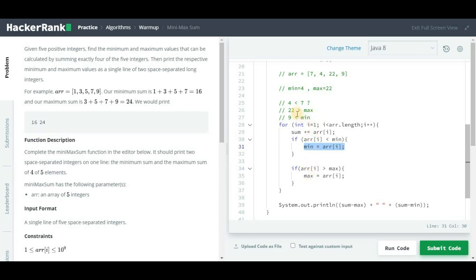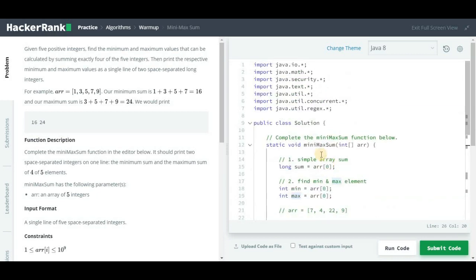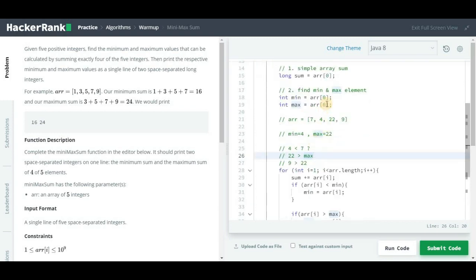Similarly for 9, it will first check if it is less than min. No, it is greater than our min. And it will also check if 9 is greater than max value which is 22. So no, that is also not correct, so it will do nothing. And in the next iteration, i will be equals to 5, so it will come out. So we will get the min as 4 and max as 22.